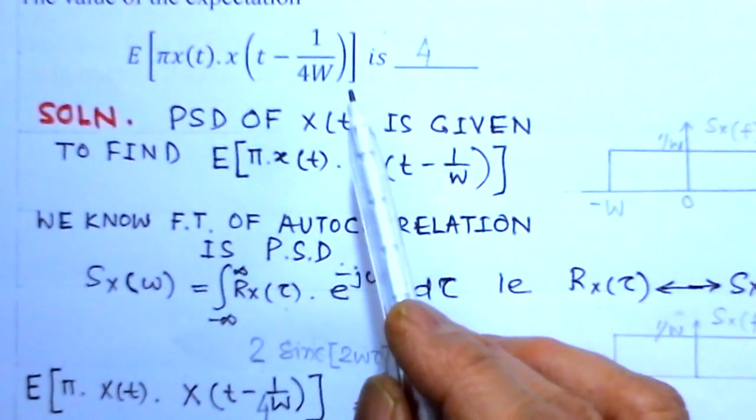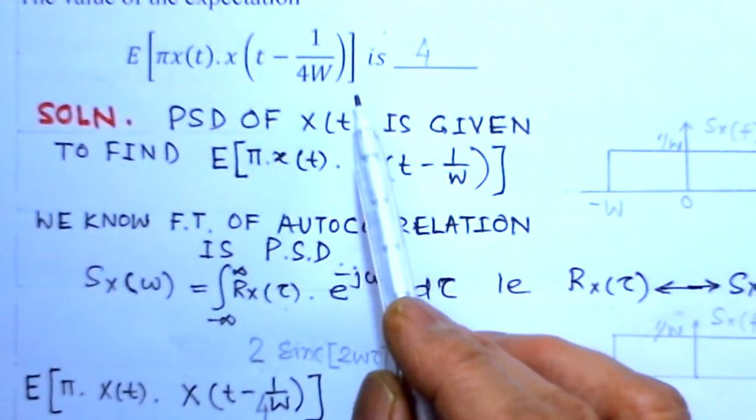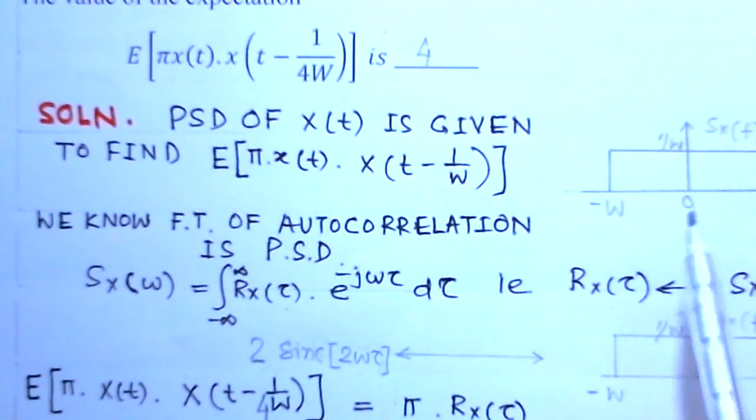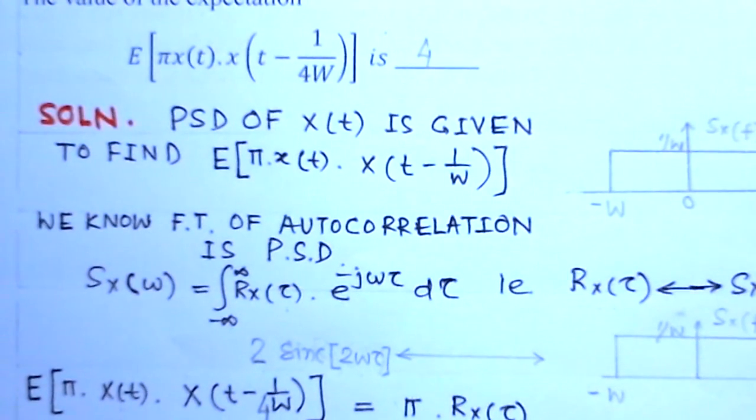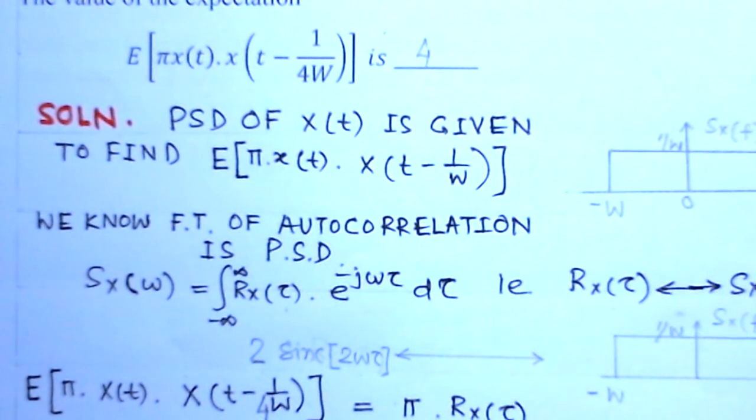Although this problem looks complex, it is quite simple provided you know some standard results for the autocorrelation function and power spectral density. Then you can apply them here and simplify the problem.